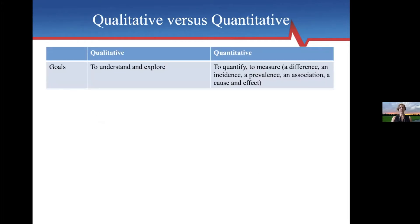A good way to understand qualitative research is to compare it to quantitative. The point of qualitative is to understand and to explore, whereas for quantitative we're often trying to quantify something — measure, determine if there's a difference, an association, a change in prevalence, a cause or effect. Those are quantitative questions, as opposed to the qualitative questions of understanding and exploring.